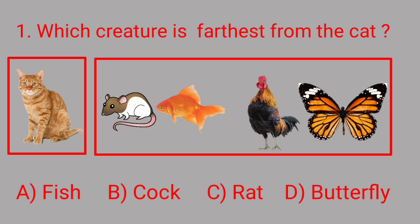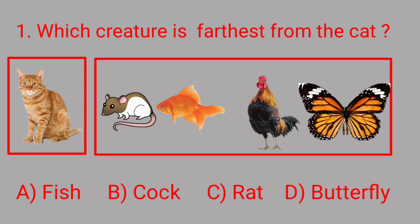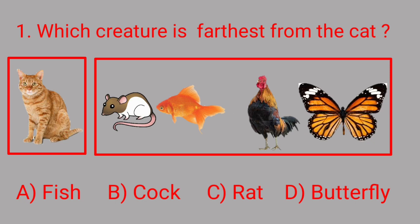Next is cock, which stands after rat and fish, so its distance is more than that of rat and fish. And at the end in the picture, butterfly is there. So students, butterfly is at the maximum distance from cat, so it is farthest from the cat.